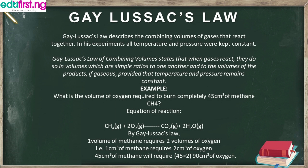For the worked example: what is the volume of oxygen required to burn completely 45 cm³ of methane (CH₄)? We write the combustion equation: CH₄ + 2O₂ → CO₂ + 2H₂O, with everything in the gaseous state. Here, CH₄ and O₂ are the reactants, while CO₂ and water are the products.